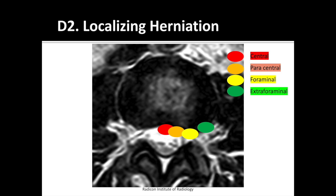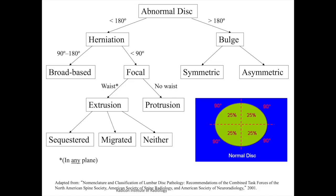Another way to look at focal disc herniation directions: the red zone denotes central disc herniation, directly impinging on the central canal. Orange is paracentral disc herniation, with a chance of impinging on the nerve root. Amber is foraminal, subarticular, or lateral disc herniation — called subarticular in reference to the facet joints — while green is extra-foraminal or far lateral disc herniation.